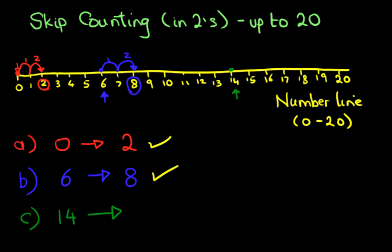Now counting in twos means we take two jumps to the right. So we've got 1, 2. What number do we end on? Well, we've landed on number 16. And that one is correct.